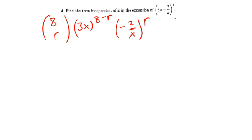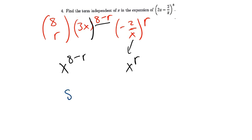Feel free to pause the video and try this one out. We're interested in the power of x: that's x to the power 8 minus r from the first part, and x to the power r from the second part. Equating the powers: 8 minus r equals r, so 8 equals 2r, and r equals 4.